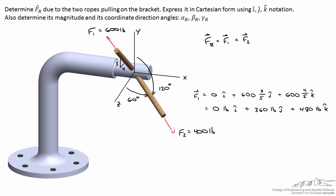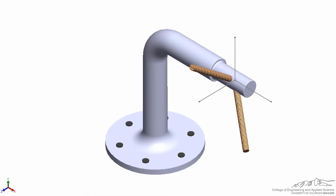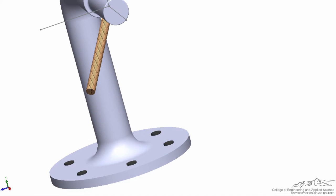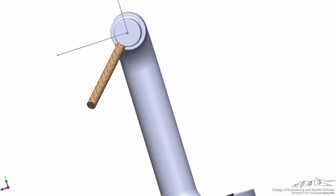Now let's think about the second rope and these angles. Beta two is the angle the rope makes from the y axis, and gamma two is the angle from the z axis. We don't know alpha two from the start, but it must have a distinct value because beta two and gamma two are already specified. Coming back to the SOLIDWORKS model with only rope two showing, we can look at it from different directions to get a feel for its orientation relative to the coordinate angles.